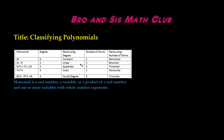This is one way to classify a polynomial. The second way is using the number of terms. 47 is a single term, so it will be a monomial. 2n minus 9 has two terms, so it will be a binomial. You can remember this as bicycle because a bicycle has two wheels, and a binomial has two terms. If it has three terms, it will be a trinomial.